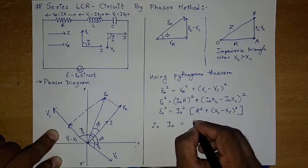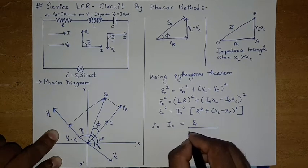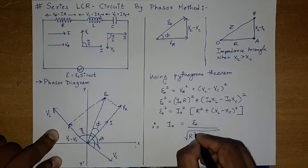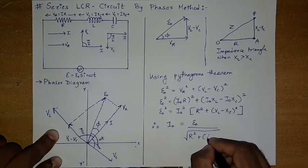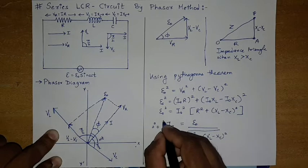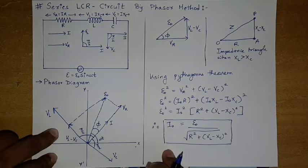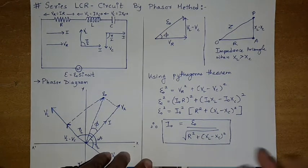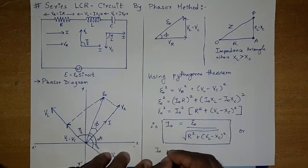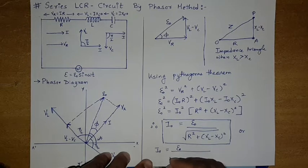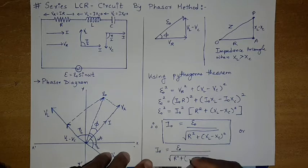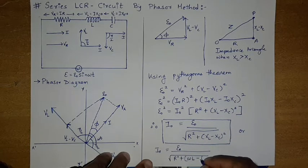Therefore, the amplitude of current is: I_not = epsilon_not / √(R² + (XL − XC)²). Since XL = ωL and XC = 1/ωC, this can also be written as: I_not = epsilon_not / √(R² + (ωL − 1/ωC)²). This is the amplitude of current for the series LCR circuit.